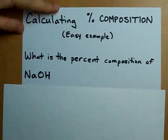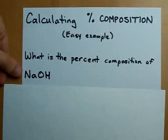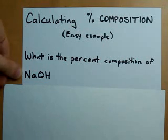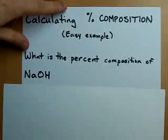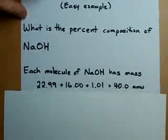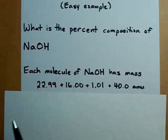The first thing you need to do is figure out how much one molecule of NaOH weighs. We do that by adding up the masses of each of the atoms in NaOH.